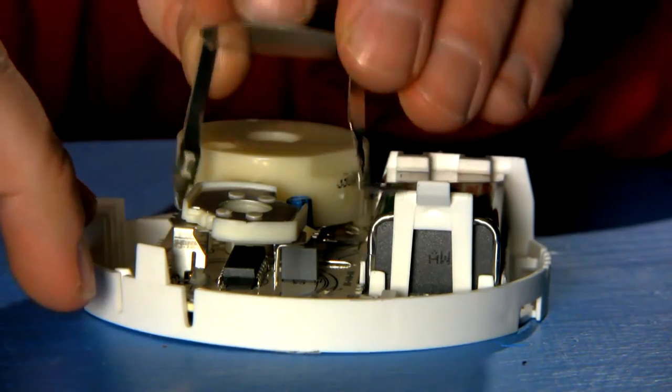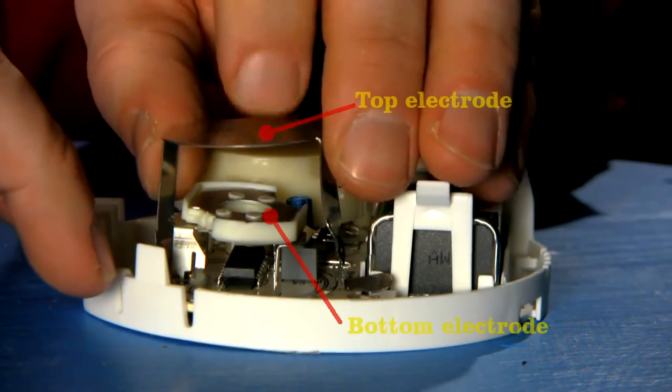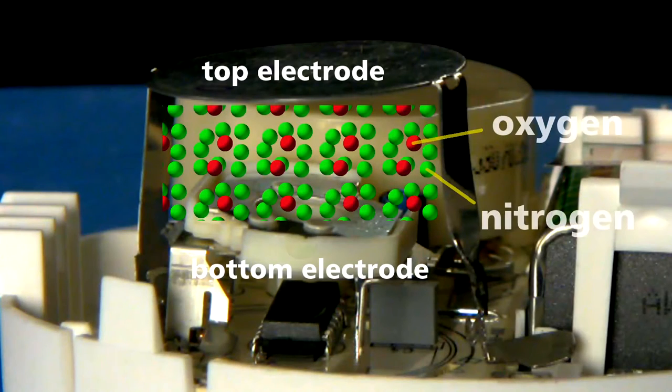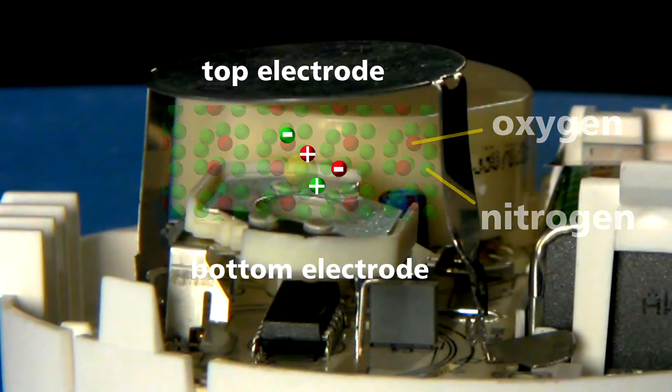Let me explain how. Air flows between these two electrodes. Now of course air doesn't conduct electricity, but when alpha particles from the radioactive americium slam into the oxygen and nitrogen molecules that make up air, they knock electrons about leaving charged gas molecules.